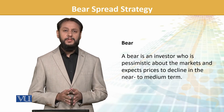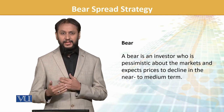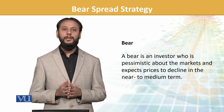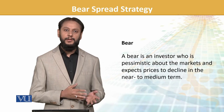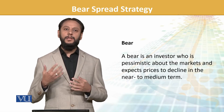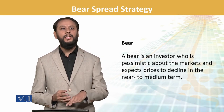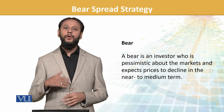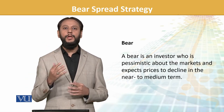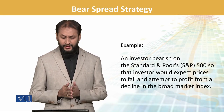A bear is an investor who is pessimistic about the market and expects prices to decline. Bear and bull — these animals have sentiments linked to them in the market. A bear slashes downward, which is why it's called bearish. A bull thrusts upward — that is the bullish sentiment context.